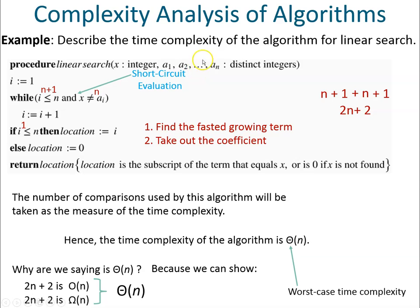Why is this the worst case? The worst case is when the element x you are searching for is at the very end of the array, meaning you have to go through a[1], a[2], a[3], all the way to a[n]. Your loop iterates until the very end. If x was at the first position, that would be the best case. If x was exactly in the middle, that would be the average case. In the next slide we'll look at the worst case and the average case in more detail.